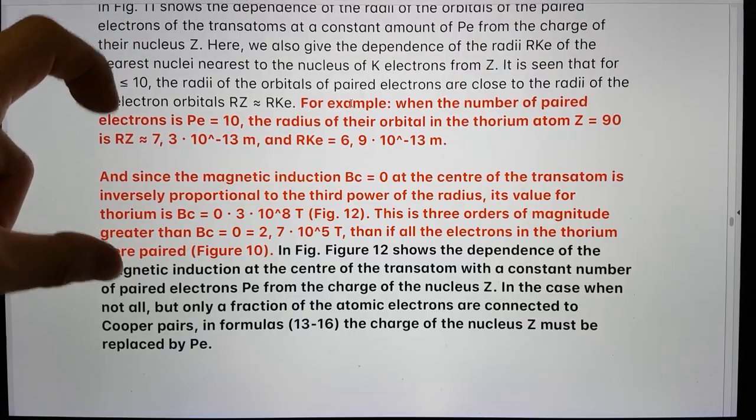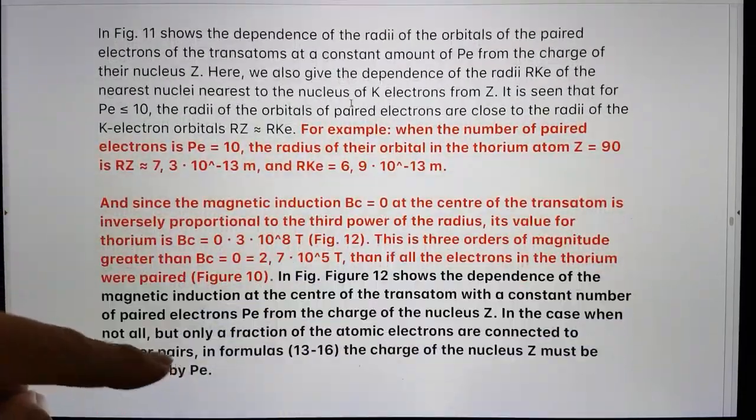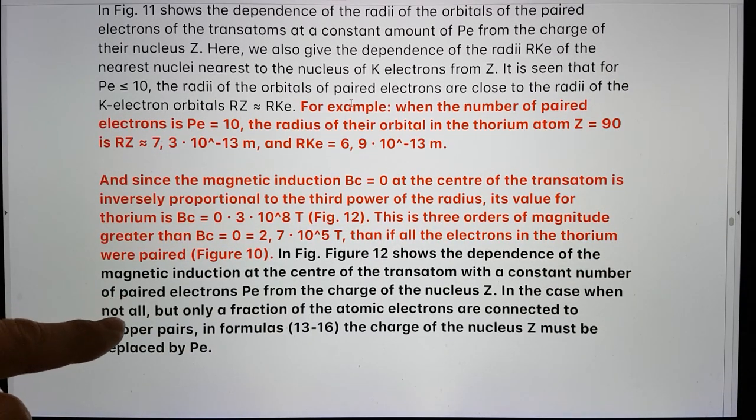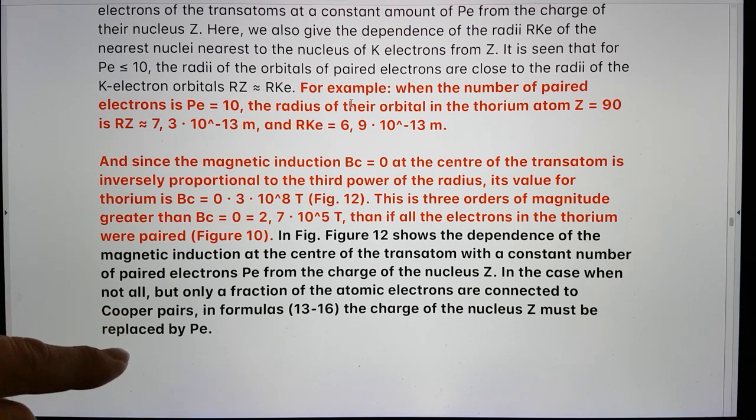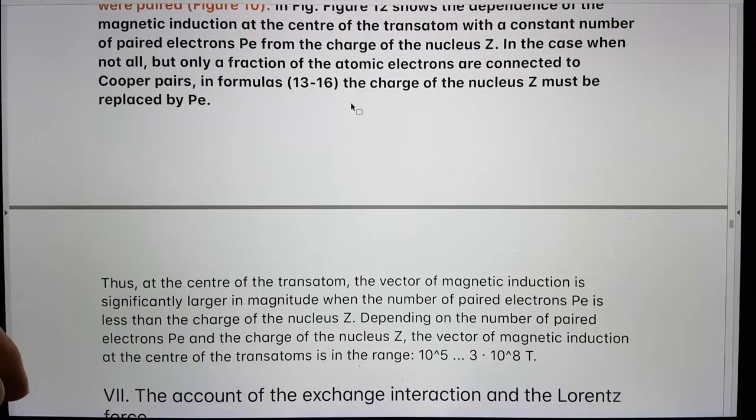In figure 12, shows the dependence of the magnetic induction at the center of the transatom with a constant number of paired electrons, Pe, from the charge of the nucleus, Z. In the case when not all, but only a fraction of the atomic electrons are connected to the Cooper pairs in formulas 13 to 16, the charge of the nucleus, Z, must be replaced by Pe. That's just how you work it out. So, I'm going to stop there and I will record three in a little while.